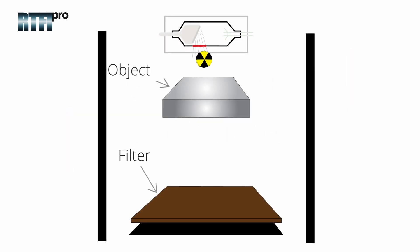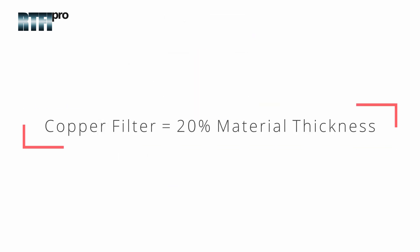Here it can be seen that scattered radiation occurring from the object itself or walls is being absorbed by the filter and not penetrating into the film. When examining a steel component using a copper filter, the maximum thickness of the filter shall be 20% of the material thickness.